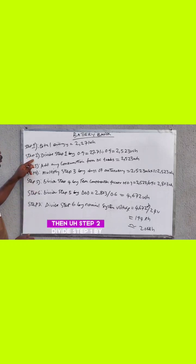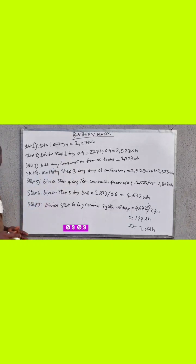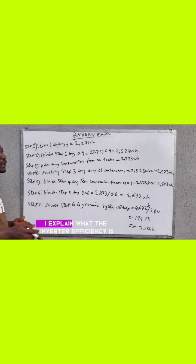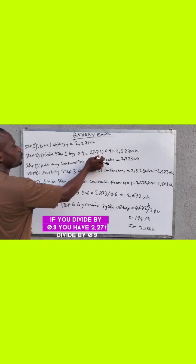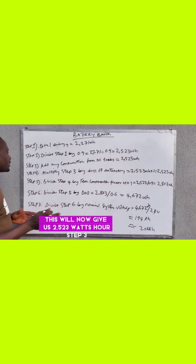Then step two: divide step one by 0.9. 0.9 here is the inverter efficiency. Check my previous videos - I explain what the inverter efficiency is. So if you divide by 0.9, you have 2271 divided by 0.9, which gives us 2523 watt-hours.